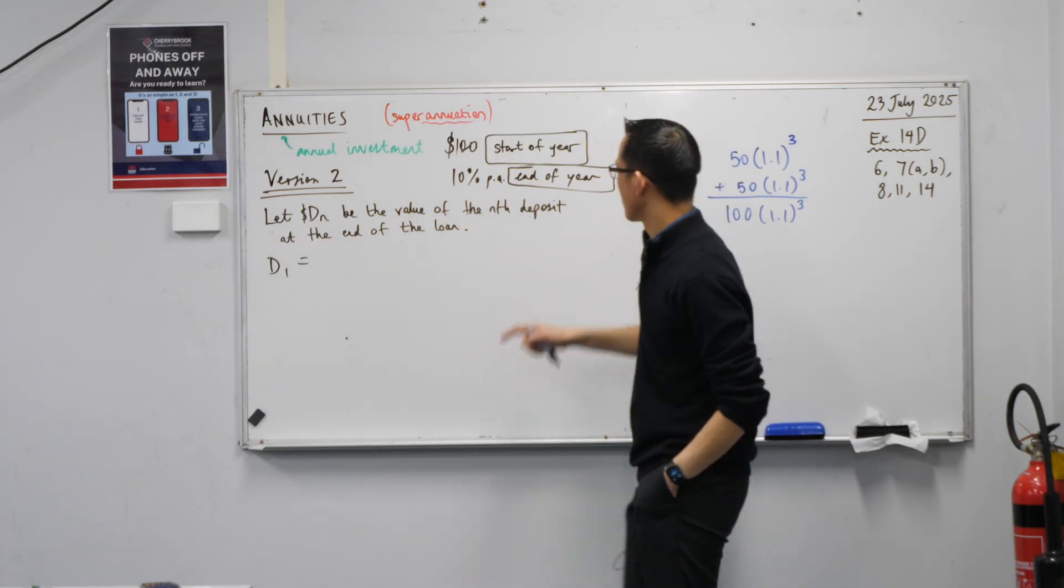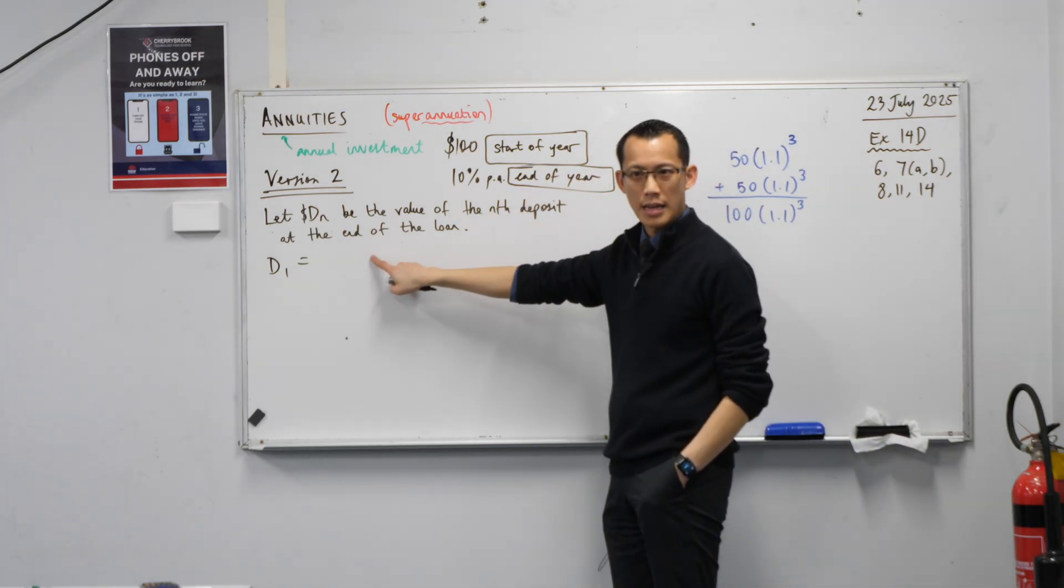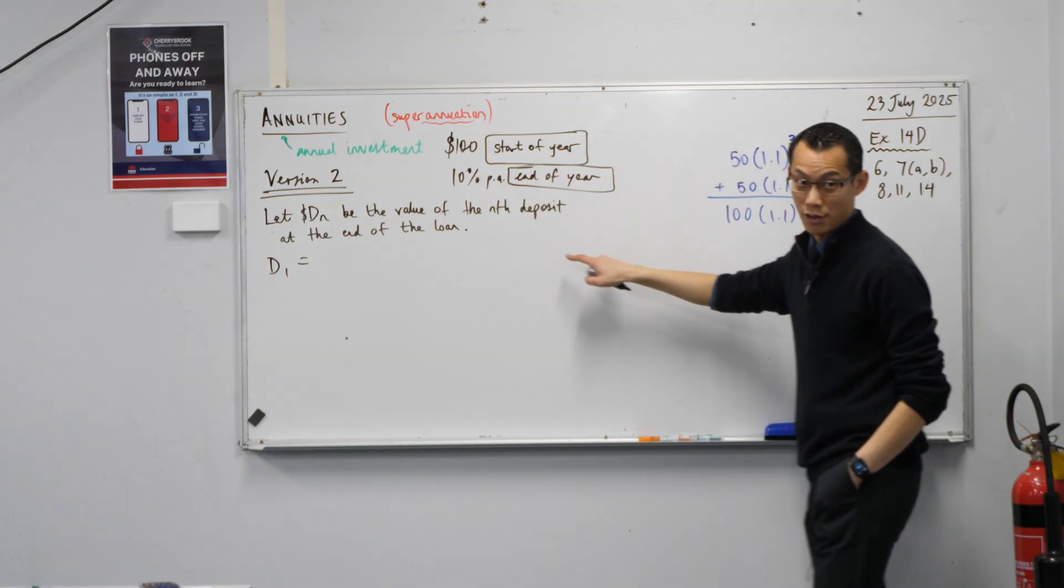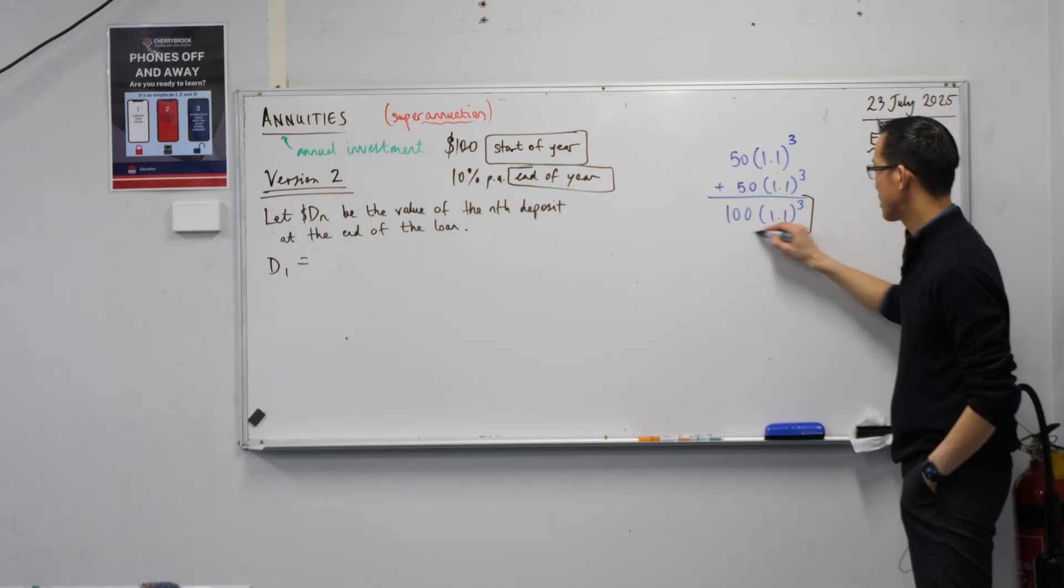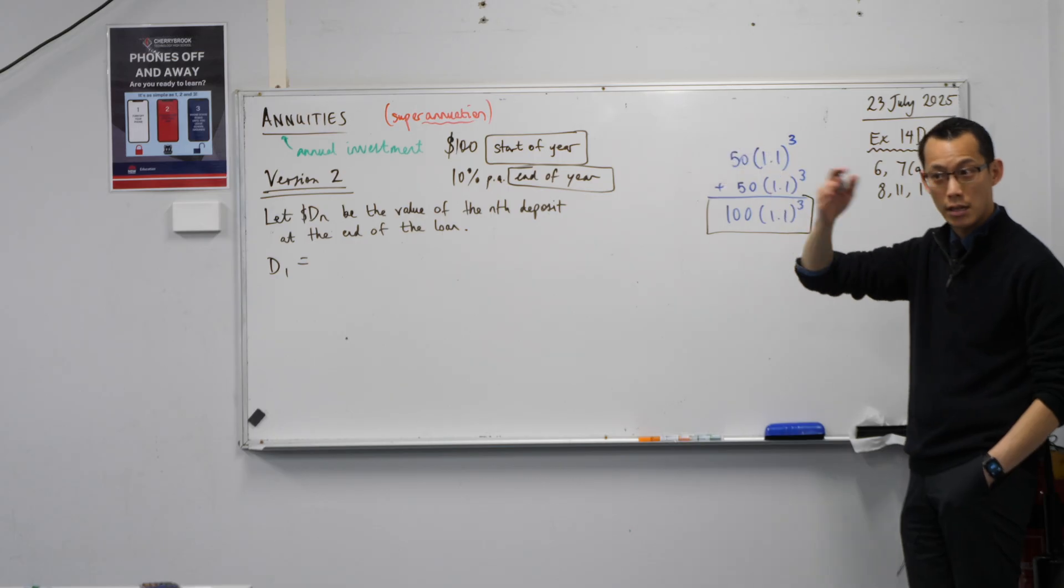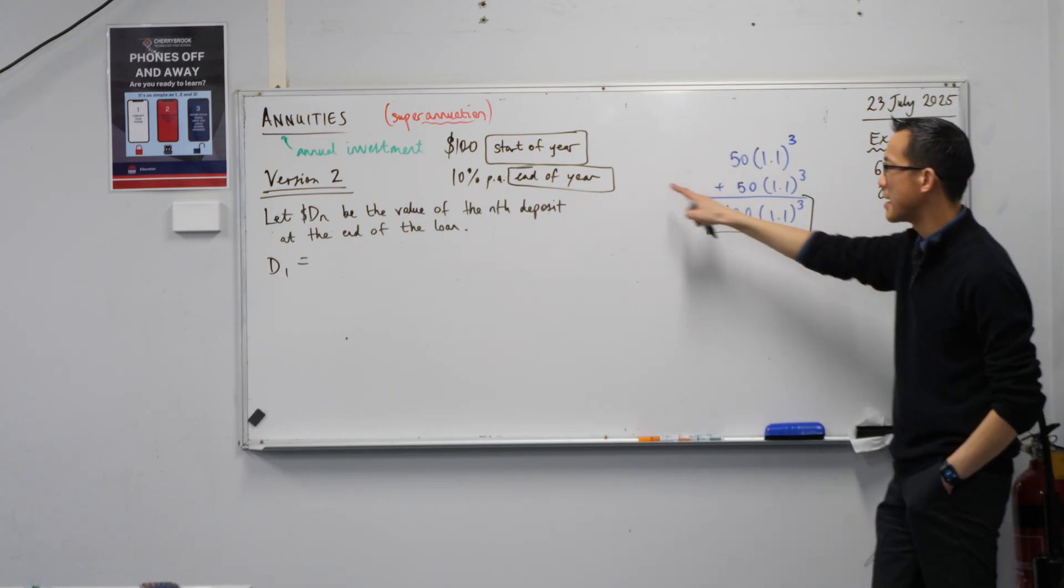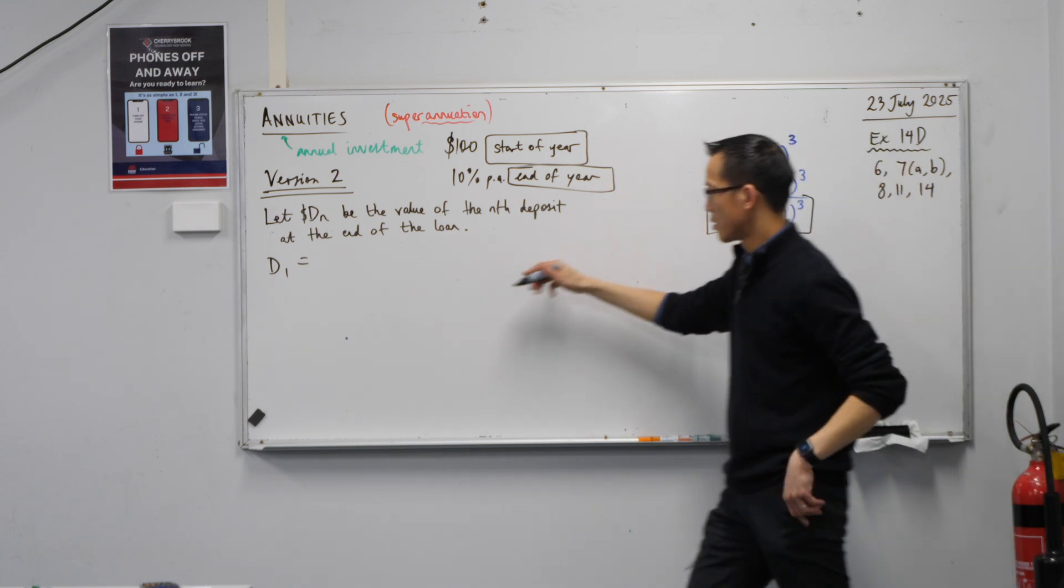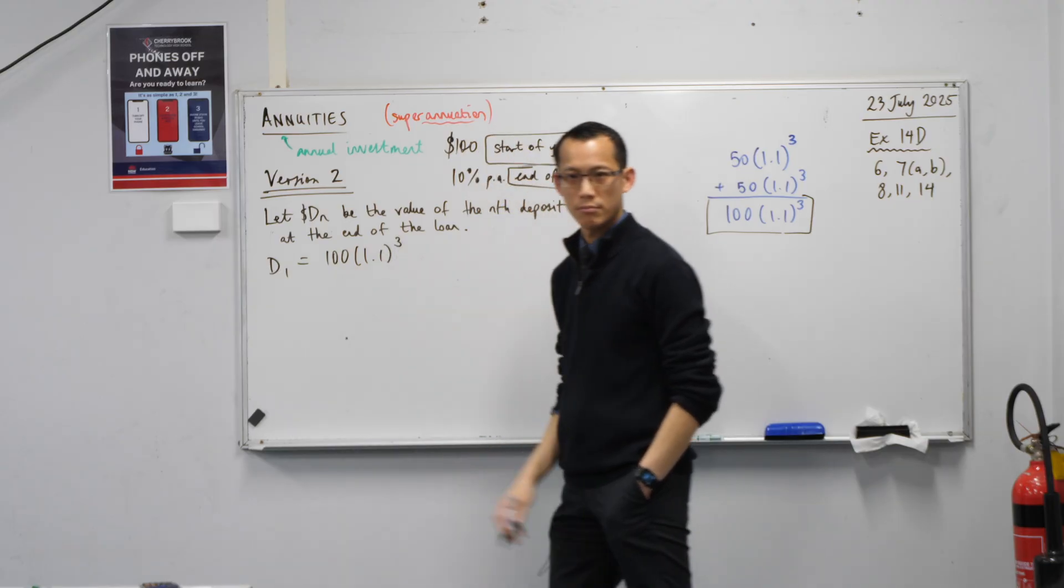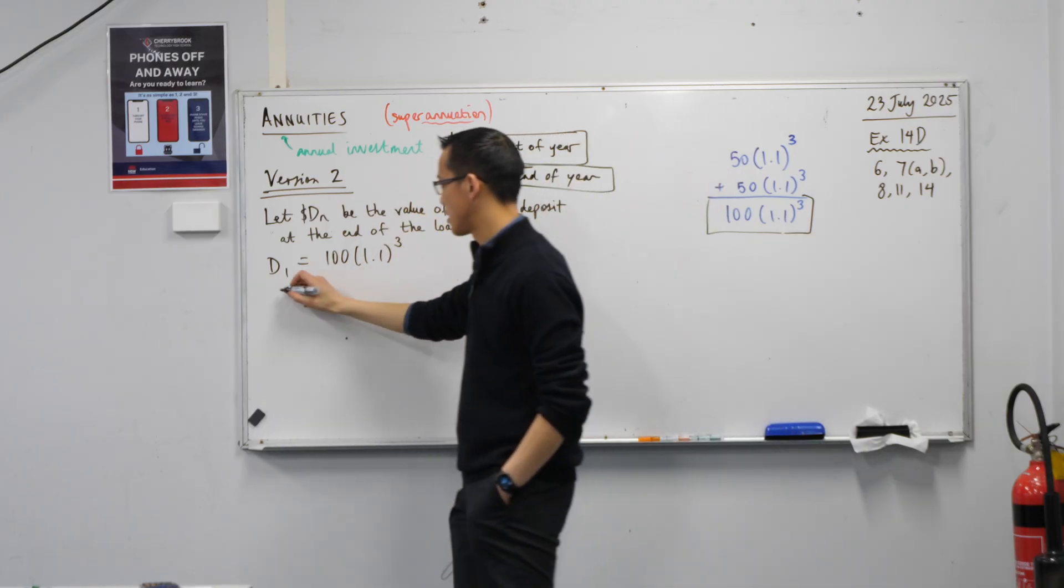That first deposit, it goes in, $100 at the start of the first year. By the end, how long has it been there for? I've actually written off the board because I've been that obvious, right? Isn't it this? It was there at the start, and we went three years. So therefore it got three interest calculations on it, because it makes it through the end of three years. Do you agree? So I'm going to say D1 equals this. And now we forget about it. We don't think about it anymore. It's in its own account separately.